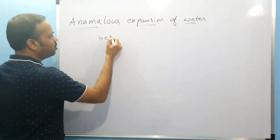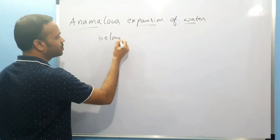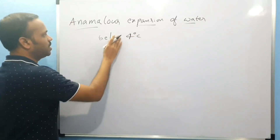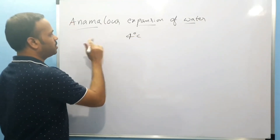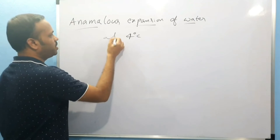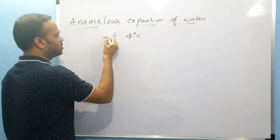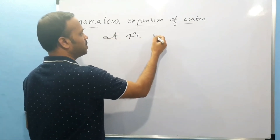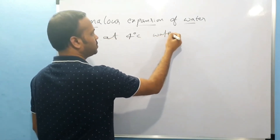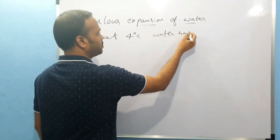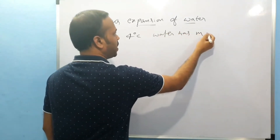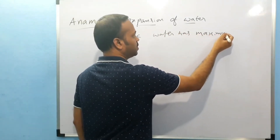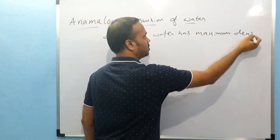Below 4 degrees, let's look at the key point. At 4 degrees, water has maximum density.